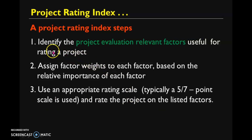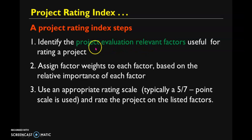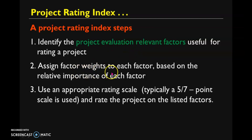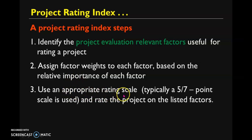The steps involved in determining the project rating index are as follows. First, identify the project evaluation relevant factors useful for rating a project. You can consider different existing factors which you think will affect your business in the future. Then assign factor weights to each factor based on the relative importance of each factor.